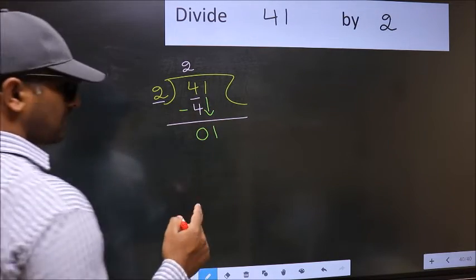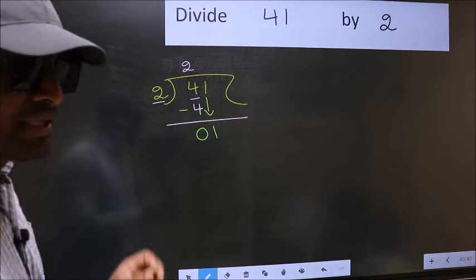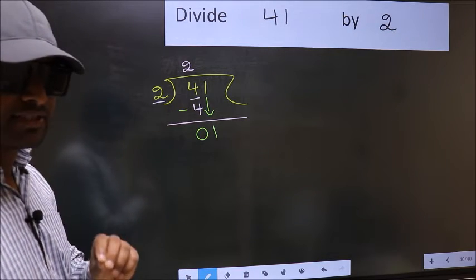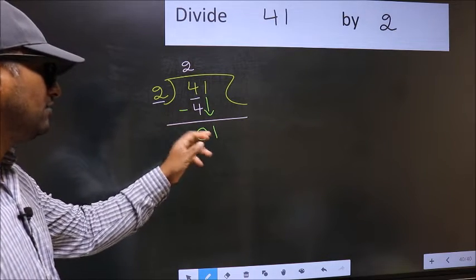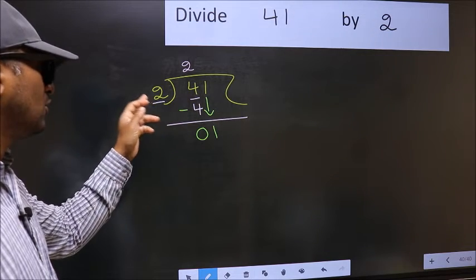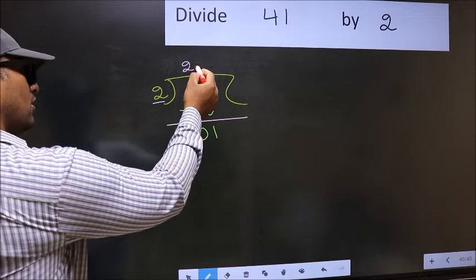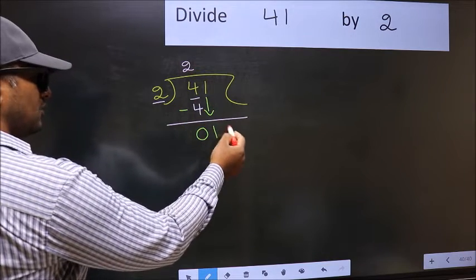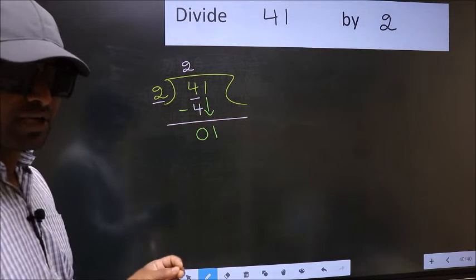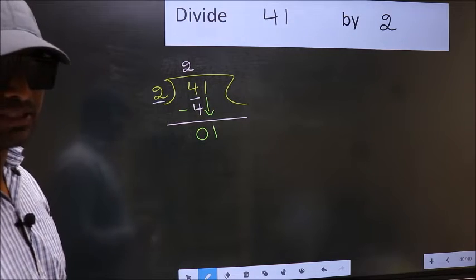After this step, the mistake happens. And the mistake is this. Here you have 1 and here 2. So what many do is they put a dot and take 0 here, which is wrong.